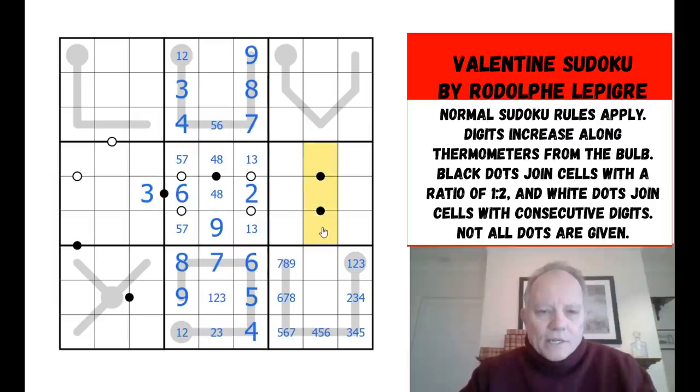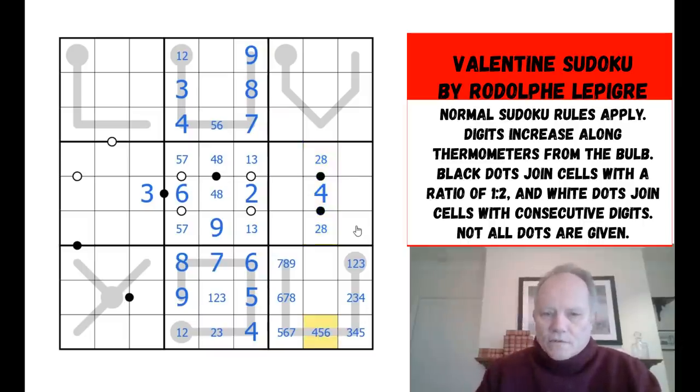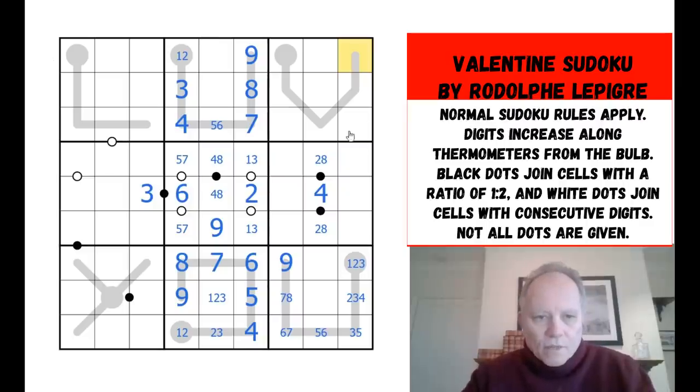And that's going to let us take five out of that. That stops that being a four, stops that being a three. Now we've got a one, two pair on the bulbs, and we can fill in three and four, which means that's not a four. Here we have a four, eight, nine triple, two of them connected by a black dot. So that's the four, eight pair. Now six is connected by a black dot to something, which has to be three.